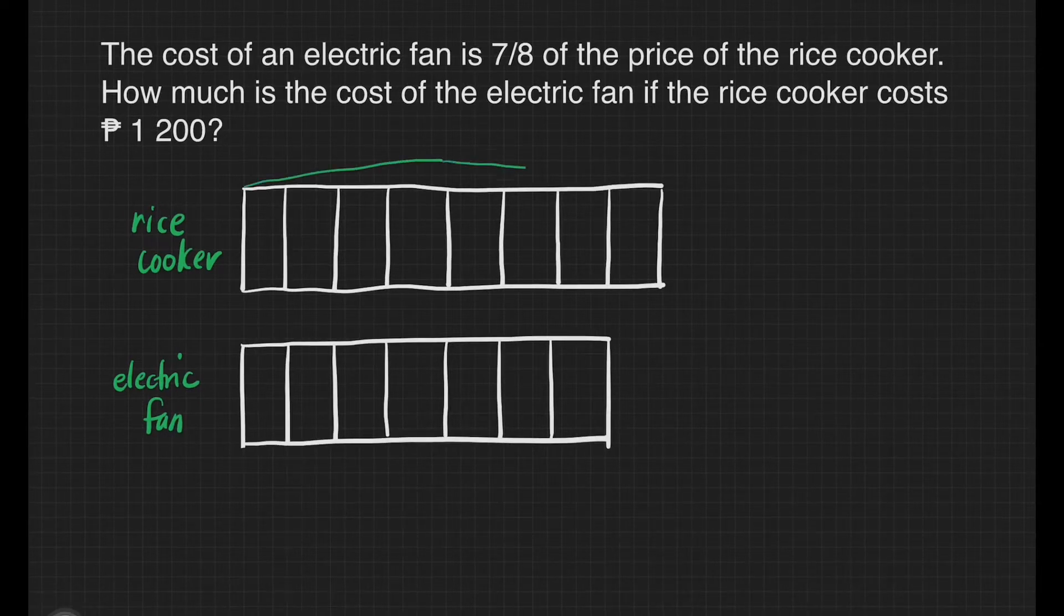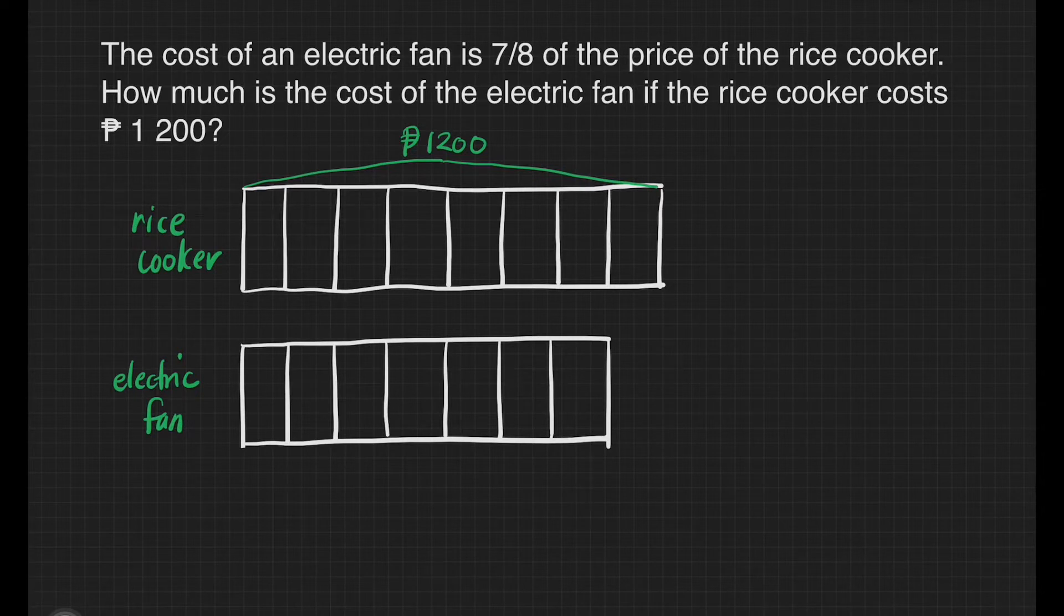Our rice cooker costs 1,200 pesos. We need to find the value of each box so we have to divide 1,200 pesos by 8.